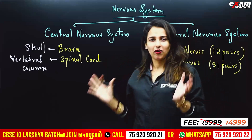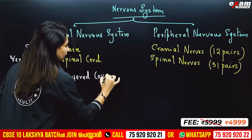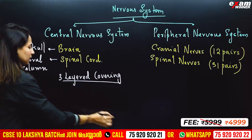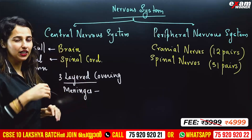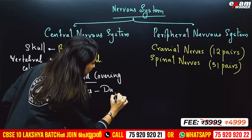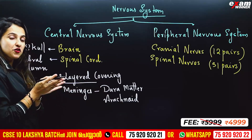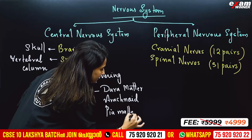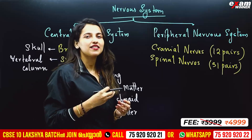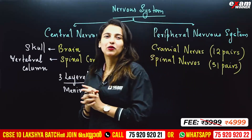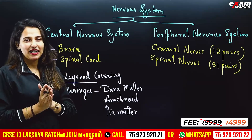The brain and spinal cord have a three-layer covering. In the middle, we have the arachnoid layer. The innermost layer is the pia mater. This covering is called Meninges, and we also have Cerebrospinal Fluid to form protection for our brain and spinal cord. This is the outer covering of our brain and nervous system.